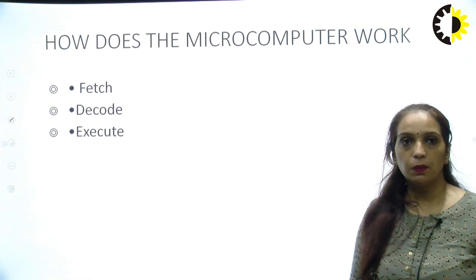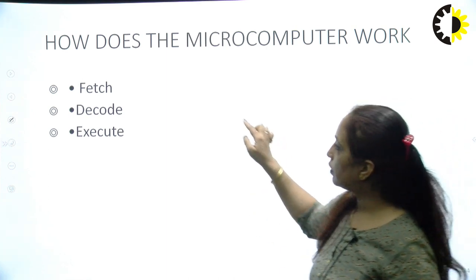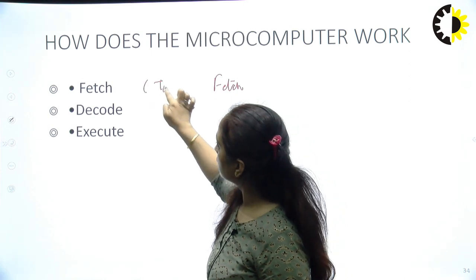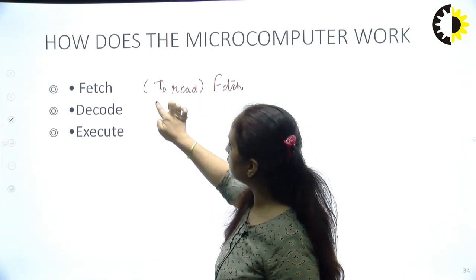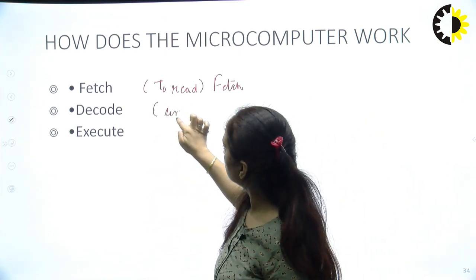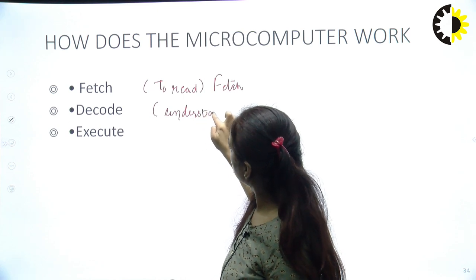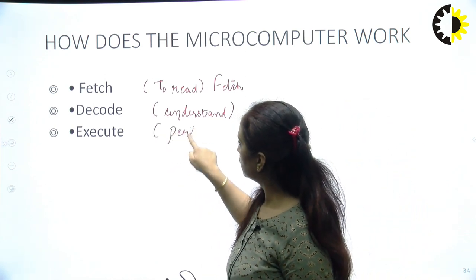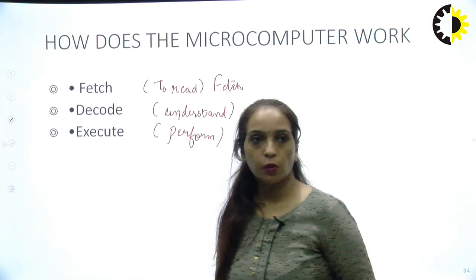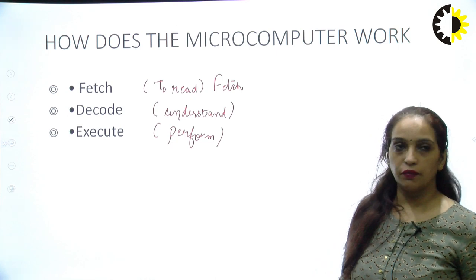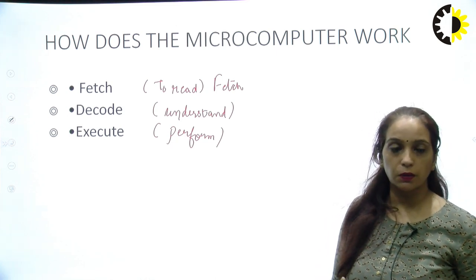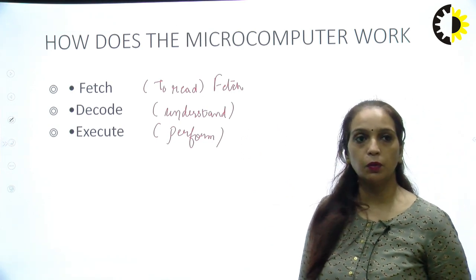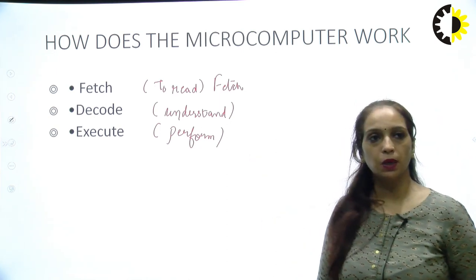How does the microprocessor work? It works in three steps. First, it will fetch — that is, read the instruction. Second, it will decode the instruction — it will understand what operation it has to perform. Third, it will execute the operation. If asked how the microcomputer works, the answer is: fetch, decode, and execute.